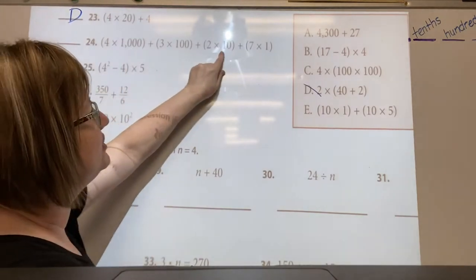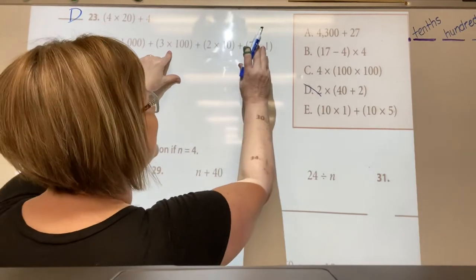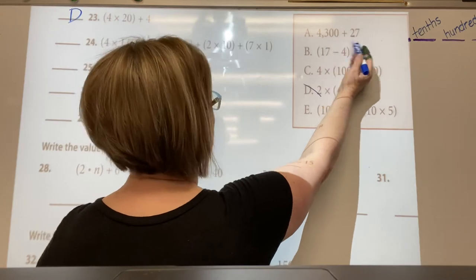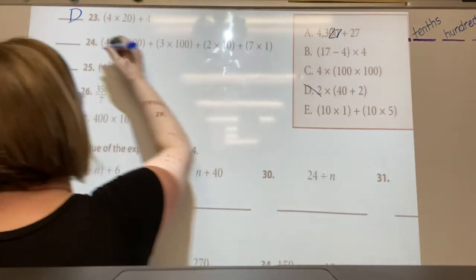Four times a thousand, three times a hundred, two times ten, one times one is four thousand three hundred twenty-seven. So it's the same as 4000 + 300 + 20 + 7 because if you added that, this would be that number.